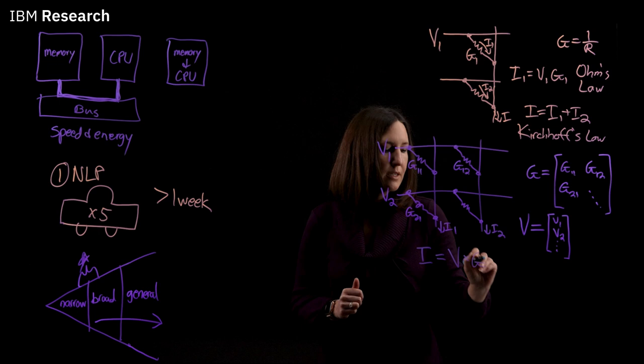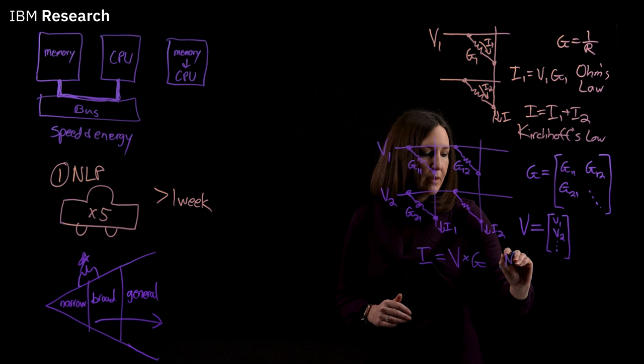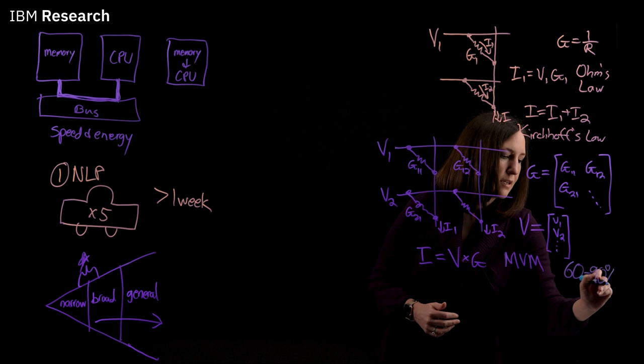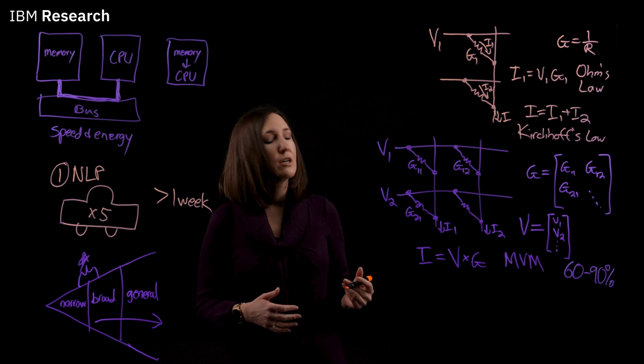And this is just a matrix vector multiplication or an MVM. And this is super convenient because it turns out that in AI inference workloads, around 60 to 90% of our operations are going to be these MVM operations. So we have that basic building block available to us.